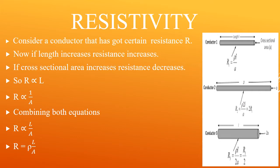We did another thing: we increased the area of cross-section, that is thickness. If area increases, we find that resistance decreases. So to summarize: if area increases, resistance decreases; if length increases, resistance increases. Now consider it mathematically — resistance is directly proportional to length, and resistance is inversely proportional to area A.